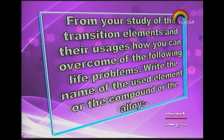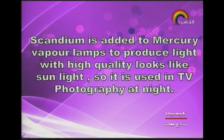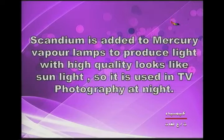Next type of question: from your study of transition elements and their usage, how can you overcome the following life problems? Write the name of the element, compound, or alloy used. First point — poor night lighting for television photography: the answer is scandium, which is added to mercury vapor lamps to produce light of high quality that looks like sunlight, used in TV and photography at night.